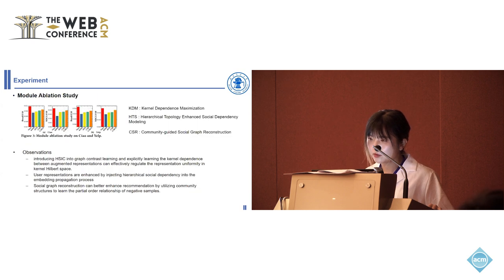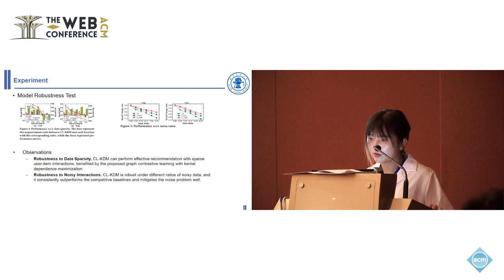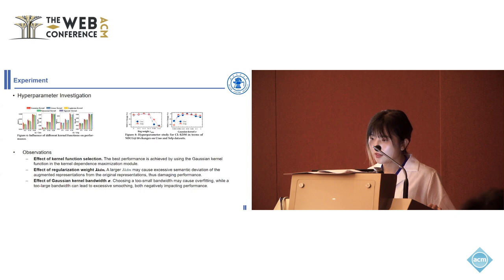We conduct module ablation studies and find that each module contributes to our model. Introducing HSIC into graph contrastive learning can effectively regulate representation uniformity in kernel Hilbert space, and user representations are enhanced by injecting hierarchical social dependency into the embedding propagation. We also conduct a model robustness test and find that our model is robust to data sparsity and noisy interactions. Hyperparameter investigation shows that the kernel function selection is critical to our model.